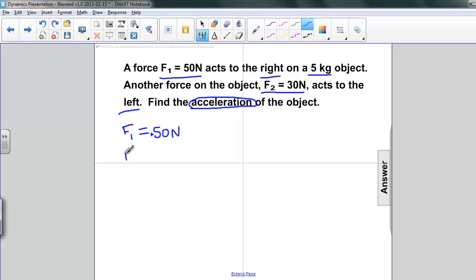Then we know F2. F2 is 30 newtons, and as it says here, it's acting to the left, so it's negative. And finally, we have the mass, which is equal to 5 kilograms. We're asked to find the acceleration.